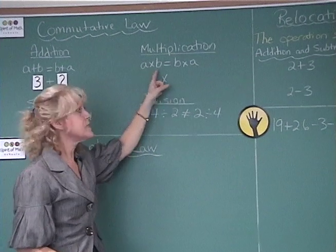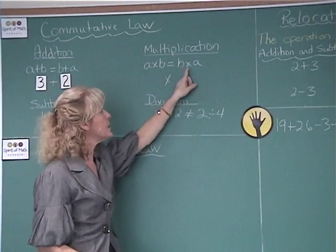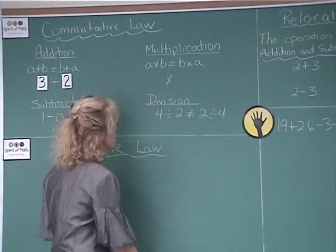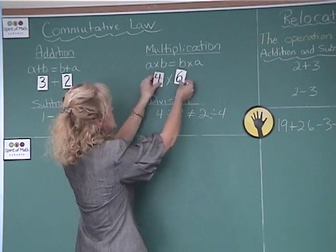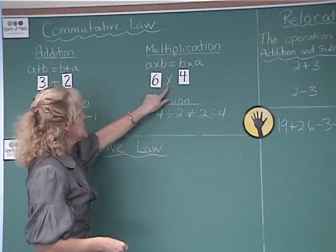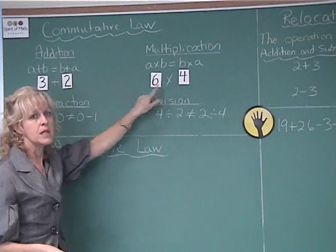In multiplication, a times b is equal to b times a. So let's look at an example. You've got 4 times 6, and that's the same as 6 times 4. Again, the sign is staying the same place just like in the addition.